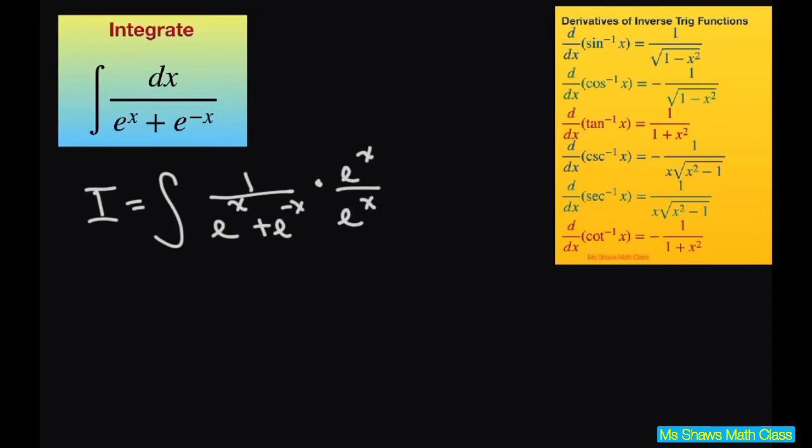So in doing that you're going to get our integral is e to the x divided by e to the 2x plus, and when you multiply these it's going to be e to the negative x plus x which is e to the 0, so that's going to be 1. And then we still have our dx.